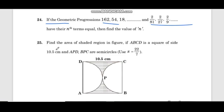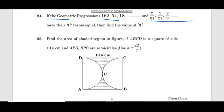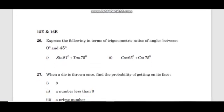Find the area of shaded region in figure if ABCD is a square of side 10.5 centimeters and APD, BPC are semicircles. Use pi equal to 22 by 7. Express the following in terms of trigonometric ratios of angles between 0 degrees and 45 degrees: sin 81, tan 70 plus tan 75, cos 65 plus cot 75.